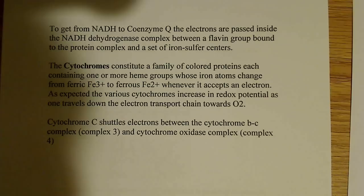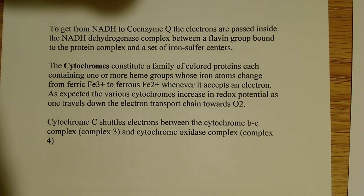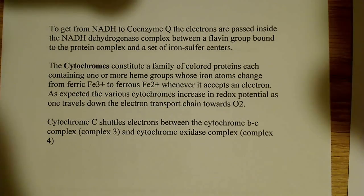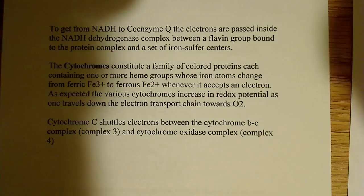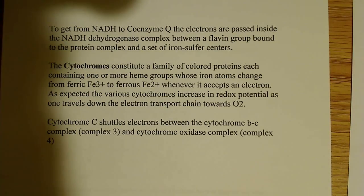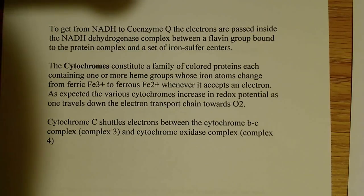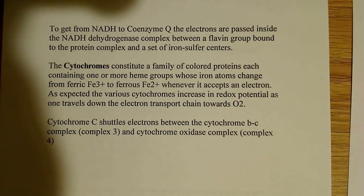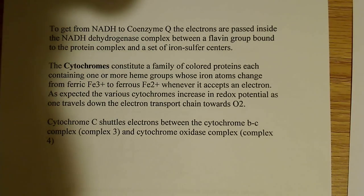The cytochromes constitute a family of colored proteins, each containing one or more heme groups, as I said before, whose iron atoms could change between the ferric Fe3+ and ferrous Fe2+ whenever it accepts an electron. As expected, the various cytochromes increase in redox potential as one travels along the electron transport chain. They're going to hold on to their electrons more and more tightly as we move along in this process.